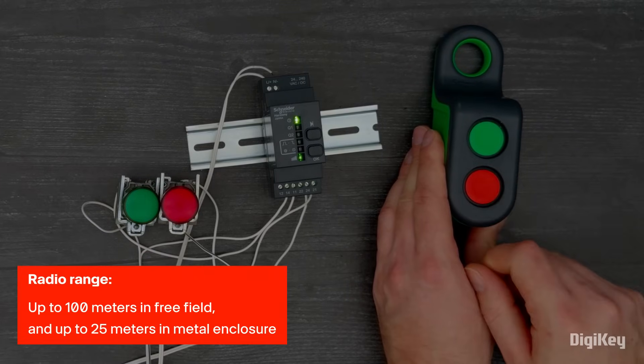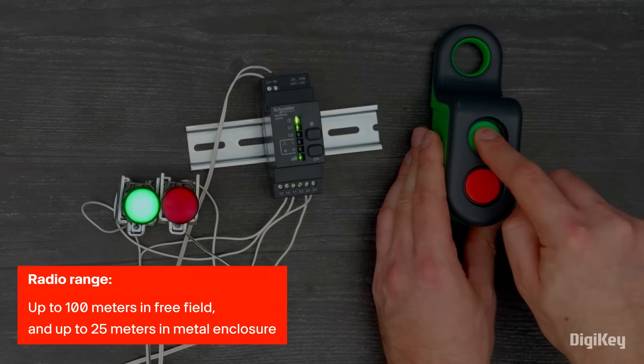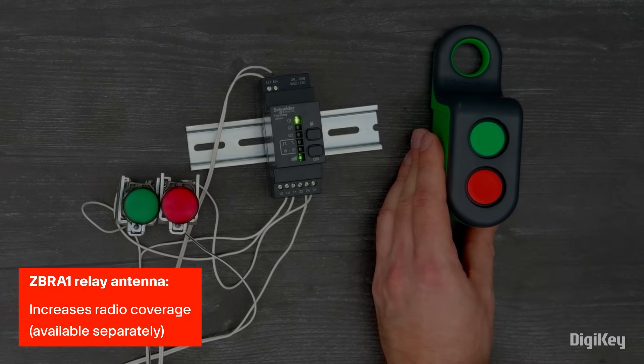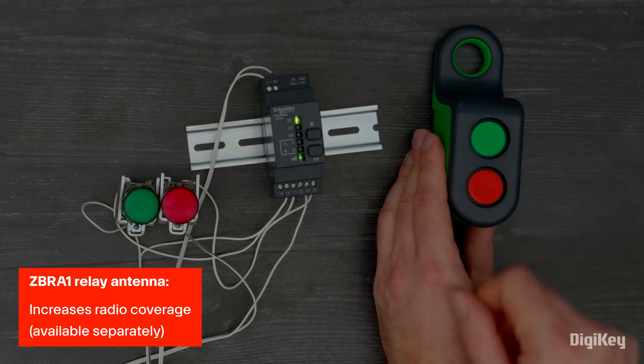It has a radio range up to 100 meters in free field and up to 25 meters with the receiver in a metal enclosure. The ZBRRA1 relay antenna, ordered separately, may be used to increase the radio coverage.